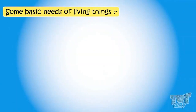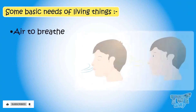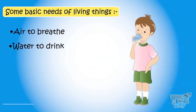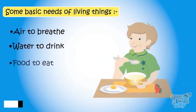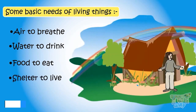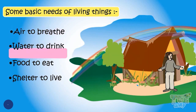Living things need some basic things: air to breathe, water to drink, food to eat, and shelter to live. Let's learn all the basic needs of living things one by one.